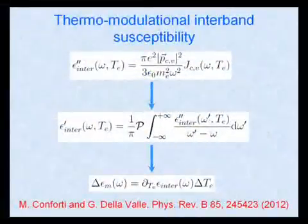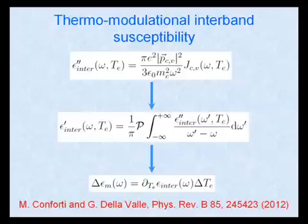The imaginary part of the interband dielectric constant can be calculated by following a semi-classical approach. Epsilon 2 depends on the electron temperature through the function j, which is called joint density of states. The real part of the interband dielectric constant can be then calculated through the Kramers-Kronig relation.